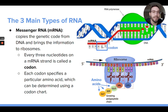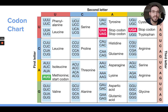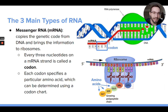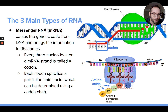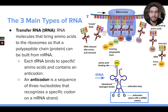When the ribosome reads the mRNA, it reads each grouping of three nucleotides called codons. Every three nucleotides on the mRNA is a codon, and each codon corresponds to a specific amino acid to be added. This is shown on a codon chart — for example, the codon AAA codes for the amino acid lysine. So each set of three letters on the mRNA codes for a specific amino acid that gets assembled at the ribosome.